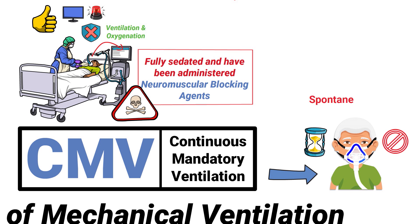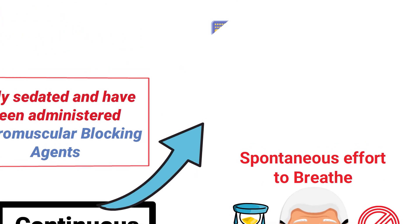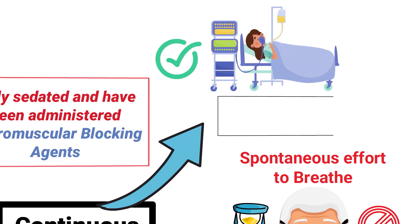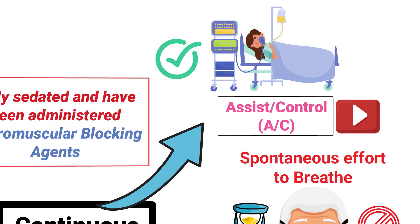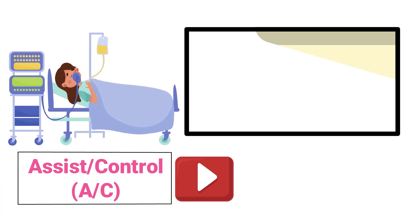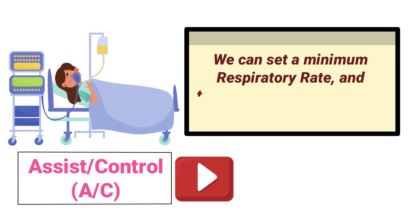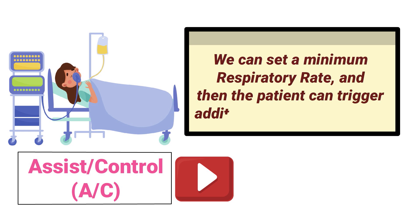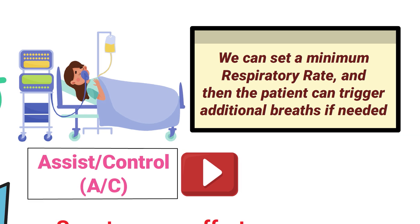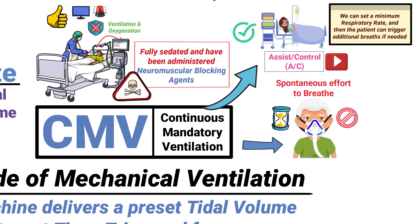In the CMV mode, breaths are always time-triggered because the patient is not making a spontaneous effort to breathe. On the other hand, if the breaths were patient-triggered, this would instead be known as assist control, which is another ventilator mode. In assist control, we can set a minimum respiratory rate and then the patient can trigger additional breaths if needed. This differs from CMV because in that mode the breaths are time-triggered.